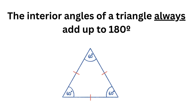The interior angles of a triangle always add up to 180 degrees. You can see on our picture here of an equilateral triangle, each one is 60 degrees. So you will always have a three-sided shape — a triangle has three sides — and if you add up all three angles they will always equal 180 degrees. In this case we're using the example of an equilateral triangle, so each vertex will be 60 degrees.